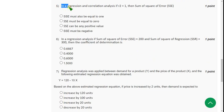Moving on to the fifth question. In a regression and correlation analysis, if R square value is 1, then sum of square of error SSE is. So for fifth question, the correct answer is option B. SSE must be equal to 0. SSE must be equal to 0.